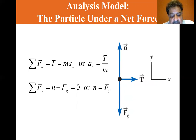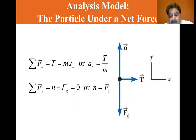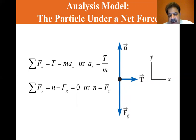If the tension T is a constant force, the acceleration ax equals T divided by m is also constant. The crate is modeled as a particle under constant acceleration in the x direction, and we use kinematics to obtain the crate's position x and velocity vx as functions of time. In a given problem, it's possible to have different analysis models applied in different directions — the crate is a particle in equilibrium in the vertical but a particle under net force in the horizontal. It's possible to describe an object by multiple analysis models.